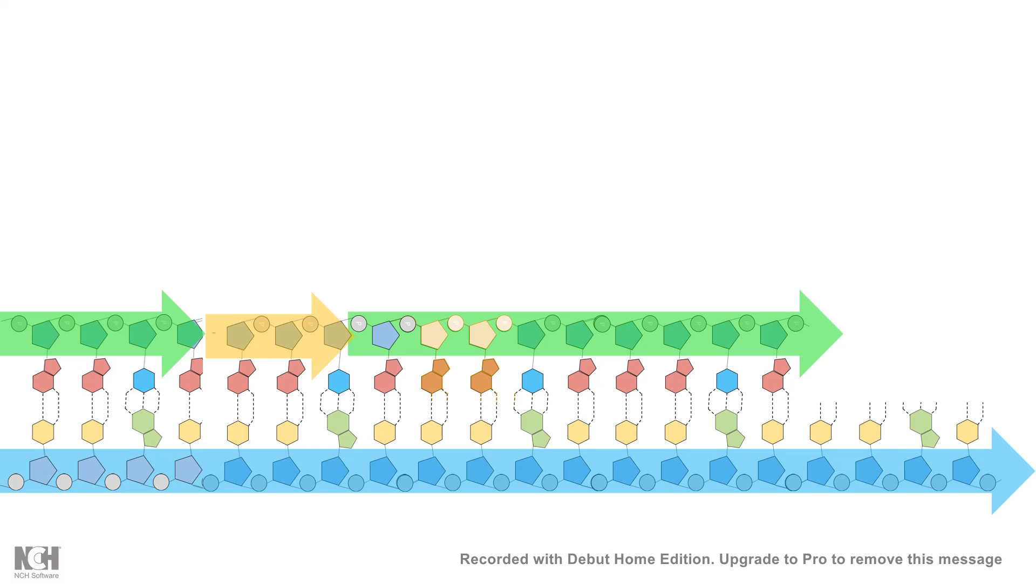At the end of replication, the primers marked in yellow are removed by certain enzymes, but a gap remains between the last two nucleotides. This gap between two ribosugars is basically a phosphodiester bond.